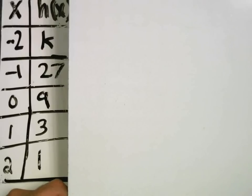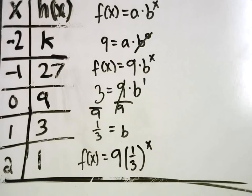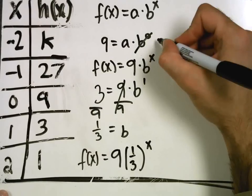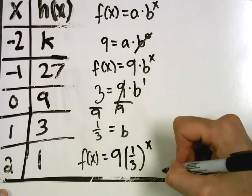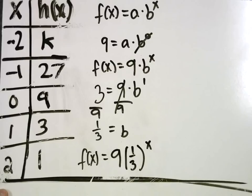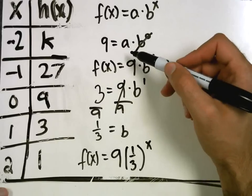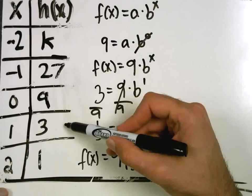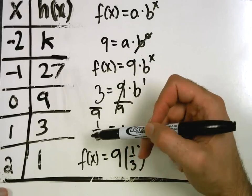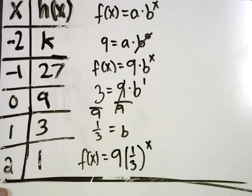Here it is. So, I found A, I found B, and then I found the equation. There was a zero. I chose that one because that allowed me to find A right away. I chose this one because it's the next easiest point for me to work with. And then I found that the function was 9 times one-third to the x power. We're going to have one more example for you to work with.